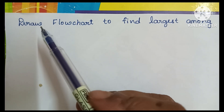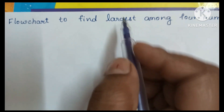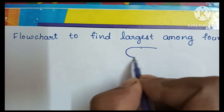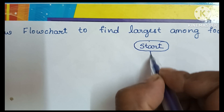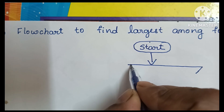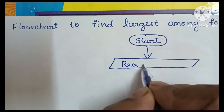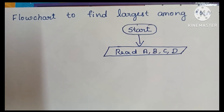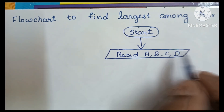Hi guys, in this video we are going to learn how to draw a flowchart to find the largest among four numbers. A flowchart always starts with a start statement, so first we draw an oval shape and write 'start' inside it. Next, we read the input values — four variable names: A, B, C, and D — written inside a parallelogram shape.